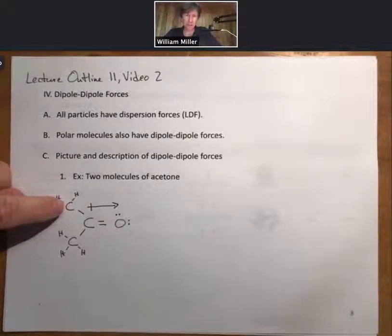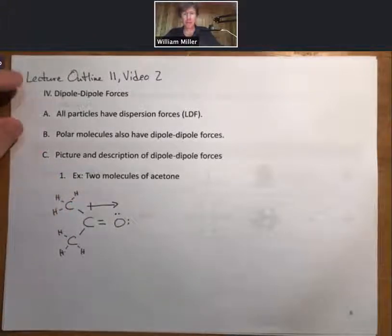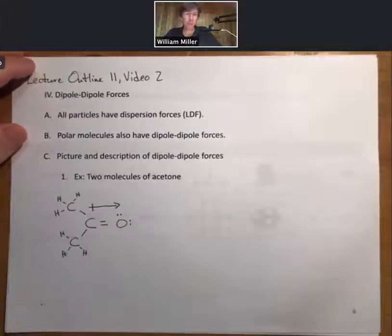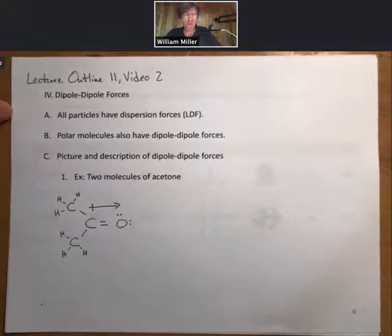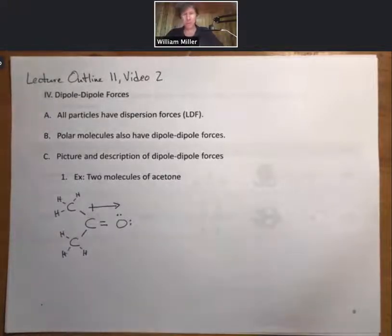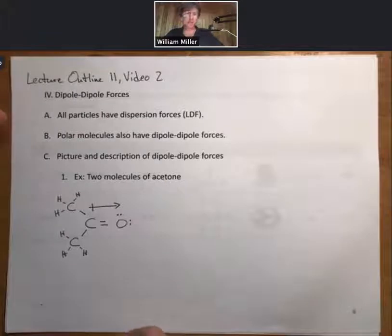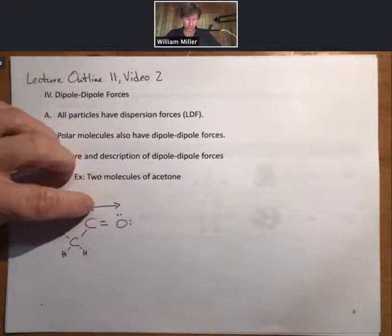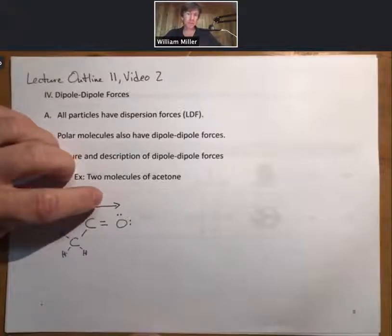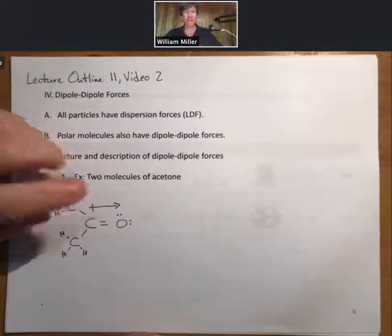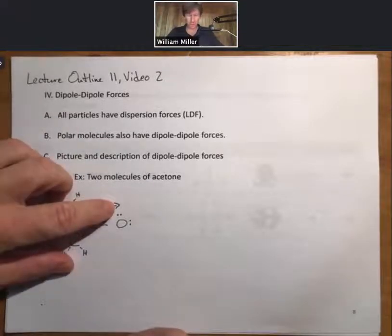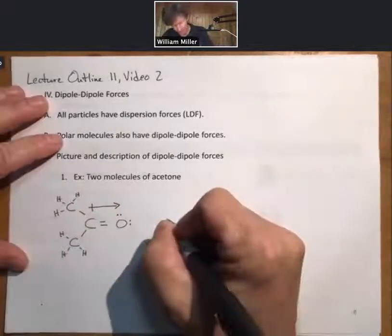There are dipoles between hydrogen and carbon with the arrow pointing towards the carbon; however, these typically are not important to draw. The principal dipole in acetone is the carbon-oxygen dipole between these two atoms. Intermolecular forces are between two different objects, so I'm now going to draw the second molecule so that the negative portion of one dipole is closest to the positive portion of the other dipole, because that's the dipole-dipole force.